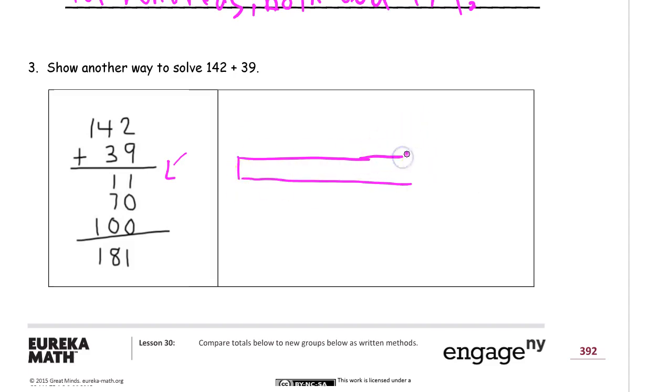I'm going to bring back, you guessed it, tape diagram addition. 142 and 39. Now, wouldn't this 39 be easier to add if it was just a 40? So let's make it plus 1. Let's make it a 40. So, now it's 40.